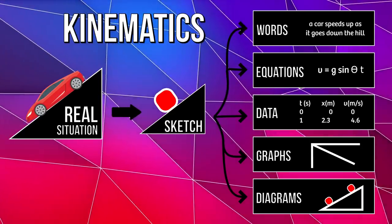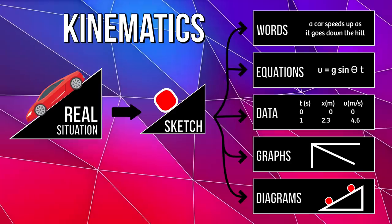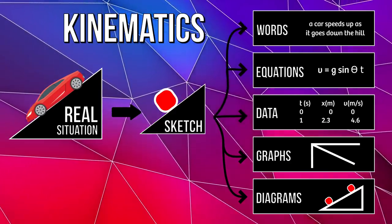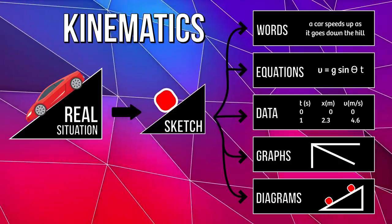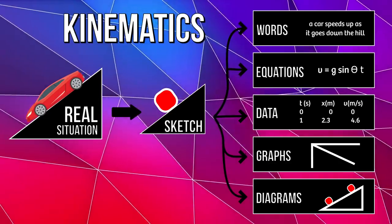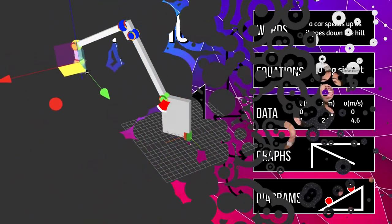Inverse kinematics takes a point in space as input and tells us how to move our arm optimally to reach that point. Forward kinematics solves the opposite, dual problem. Knowing how our arm works, it tells us which points in space it can reach.